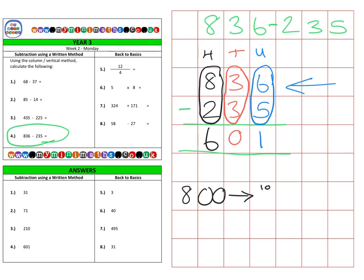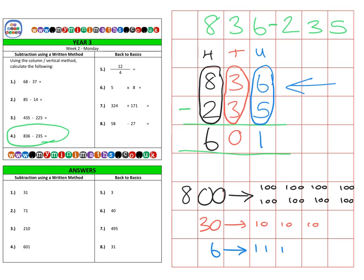We can also break 836 down into its place values: eight hundreds — 100, 200, 300, 400, 500, 600, 700, 800 — plus three tens, which is a 10, a 10, and a 10, and finally six ones.